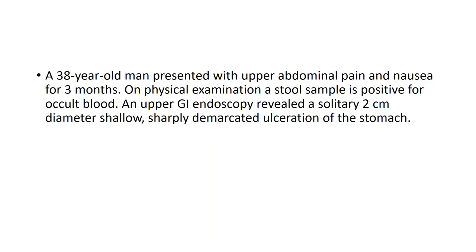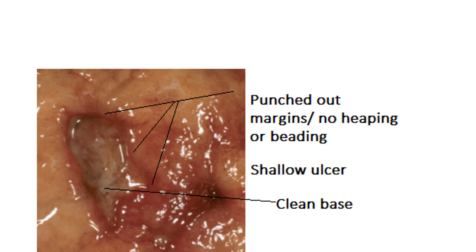Benign gastric ulcer typically presents with abdominal pain and nausea, with a shorter history. On physical examination, a stool sample is positive for occult blood. Upper GI endoscopy reveals a solitary, approximately two-centimeter diameter, shallow ulcer. We can now compare the findings of the two types.